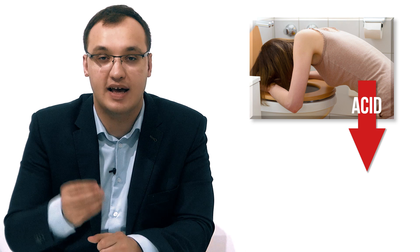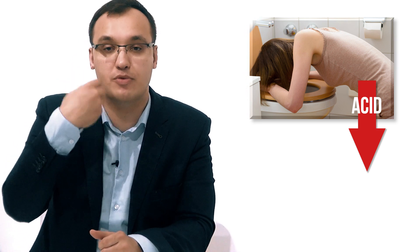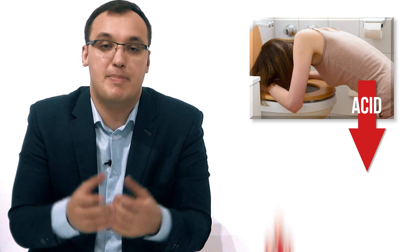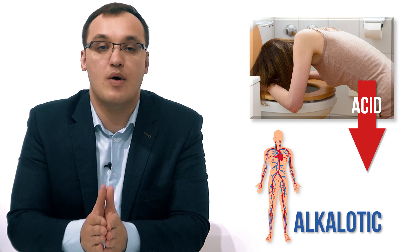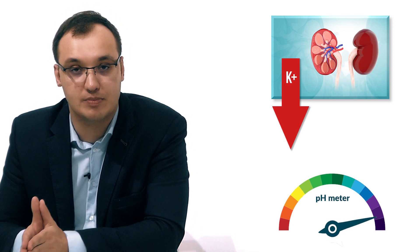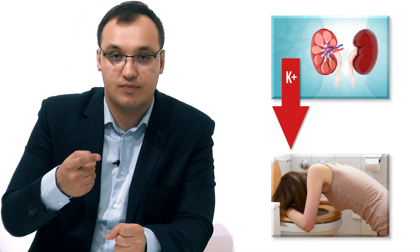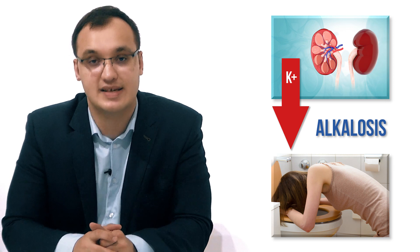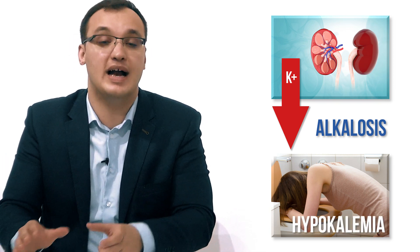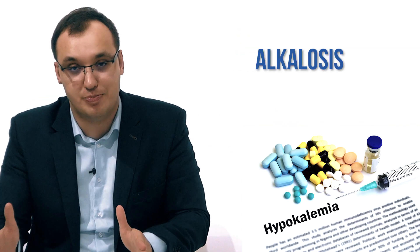We also have vomiting. If you vomit, you lose a lot of gastric acid — and as the name says, it's acid. So if you lose a lot of acid from your stomach, the body becomes alkalotic. The pH goes up, and when the pH goes up, the kidneys will tend to remove more potassium. So by vomiting you get alkalosis, and by alkalosis you get excretion of potassium by the kidneys, and thereby you get hypokalemia. This is consistent with what we learned: alkalosis means hypokalemia.